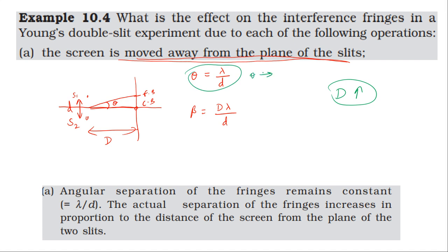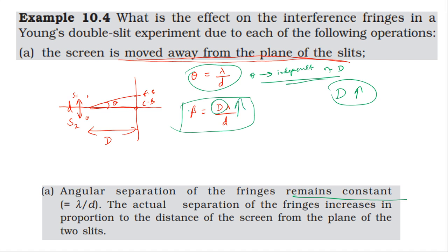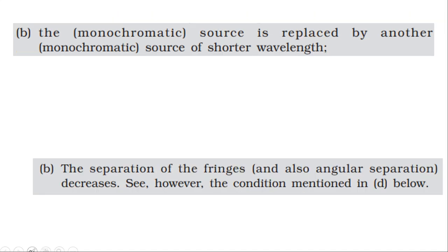When capital D increases, the angular width — angular separation — is independent of D. So the angular separation between the fringes does not change; it remains constant. But the fringe width beta increases because beta is directly proportional to D. So the actual separation of fringes increases proportionally with distance.